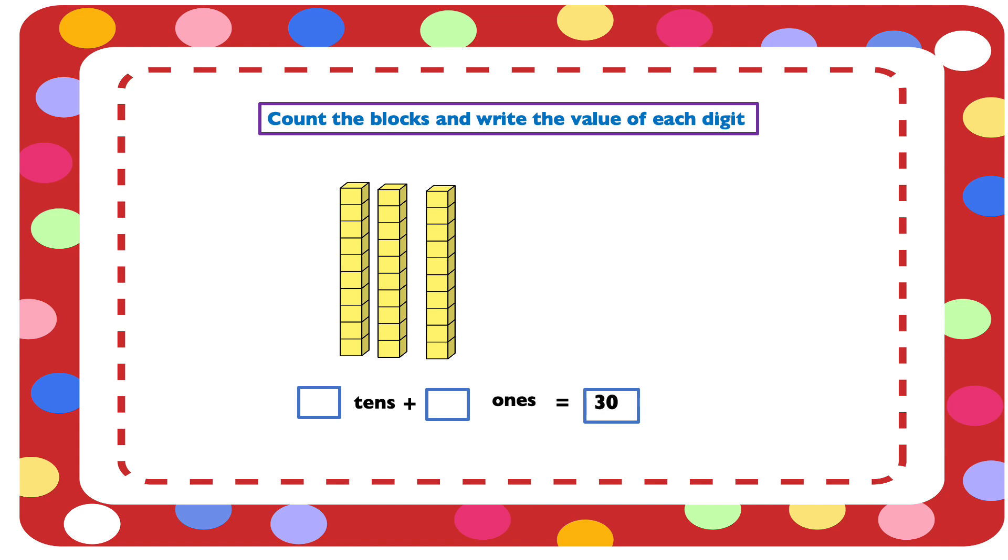So we have 30 blocks. Now we have 3 tens and 0 ones. So the value of 3 in 30 is 3 tens. And the value of 0 is 0 ones in 30.